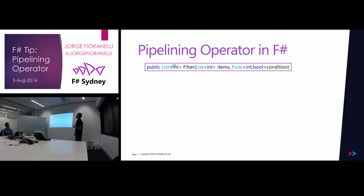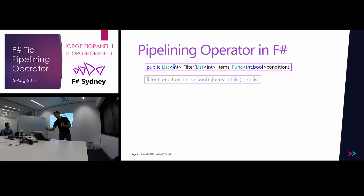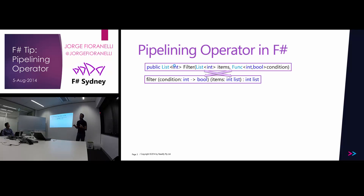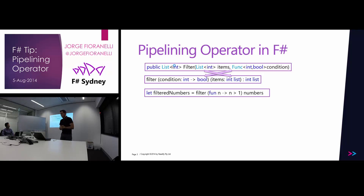Taking the same concept and converting that C# method to an F# function would look like this, in which the first argument is going to be a condition and the second argument is going to be the list of items. You can see that we changed the order, and you will see why in a minute.